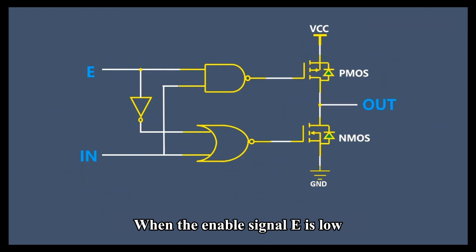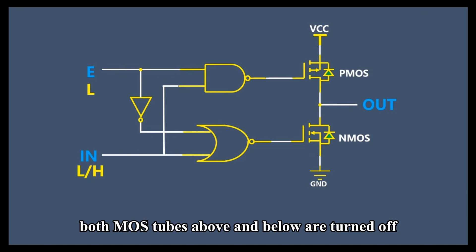When the enable signal E is low, whether the input is high or low, both MOS tubes above and below are turned off.